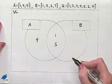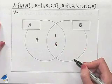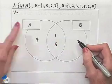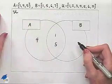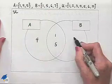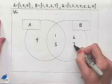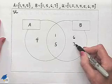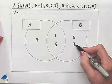For set B, we need 1, 5, 6, 7. We already have 1, 5. 6, 7 will be in this section of set B, which is not part of the intersection.